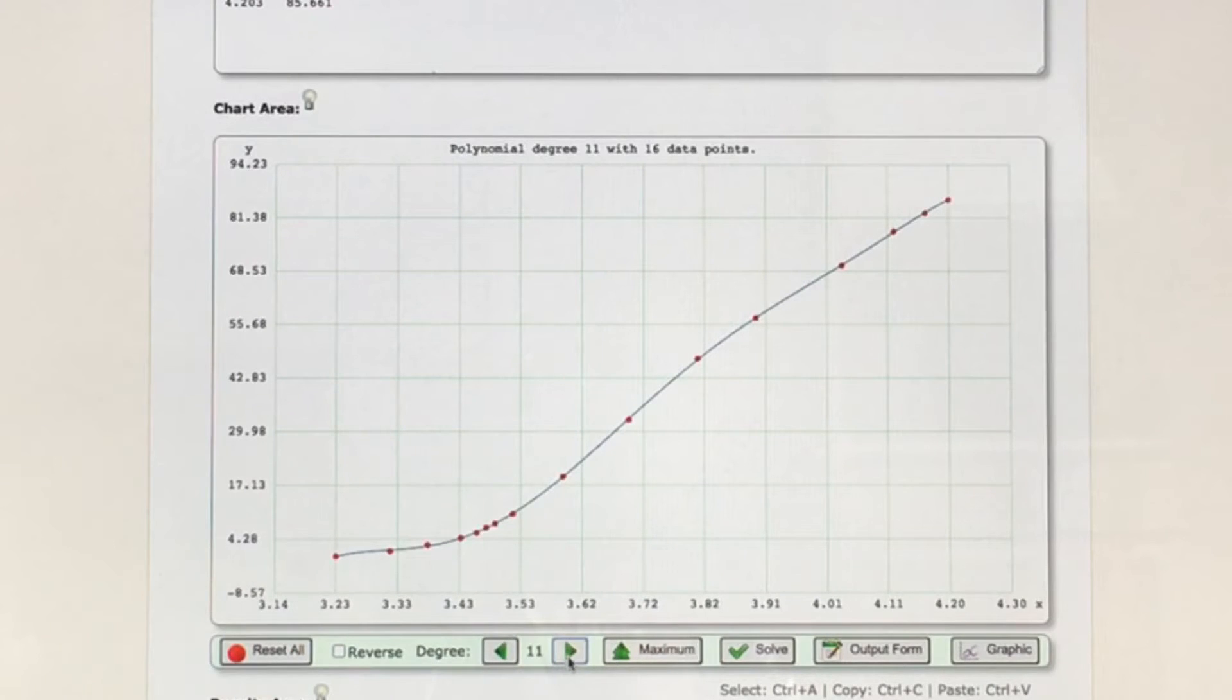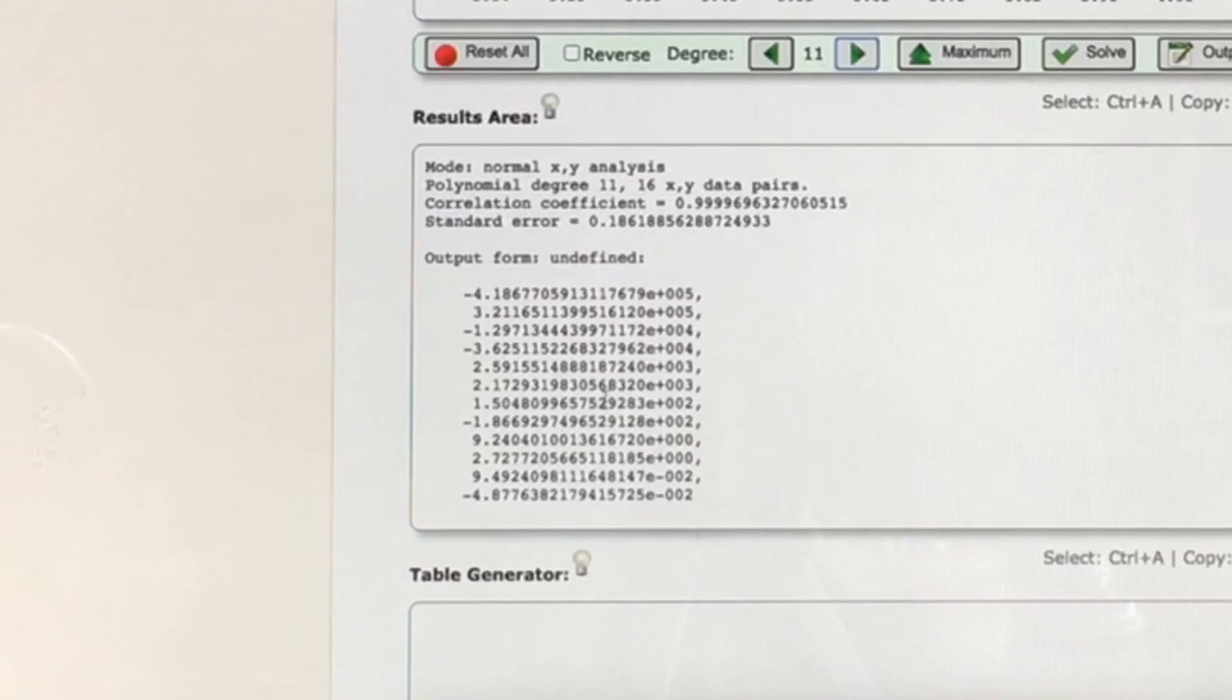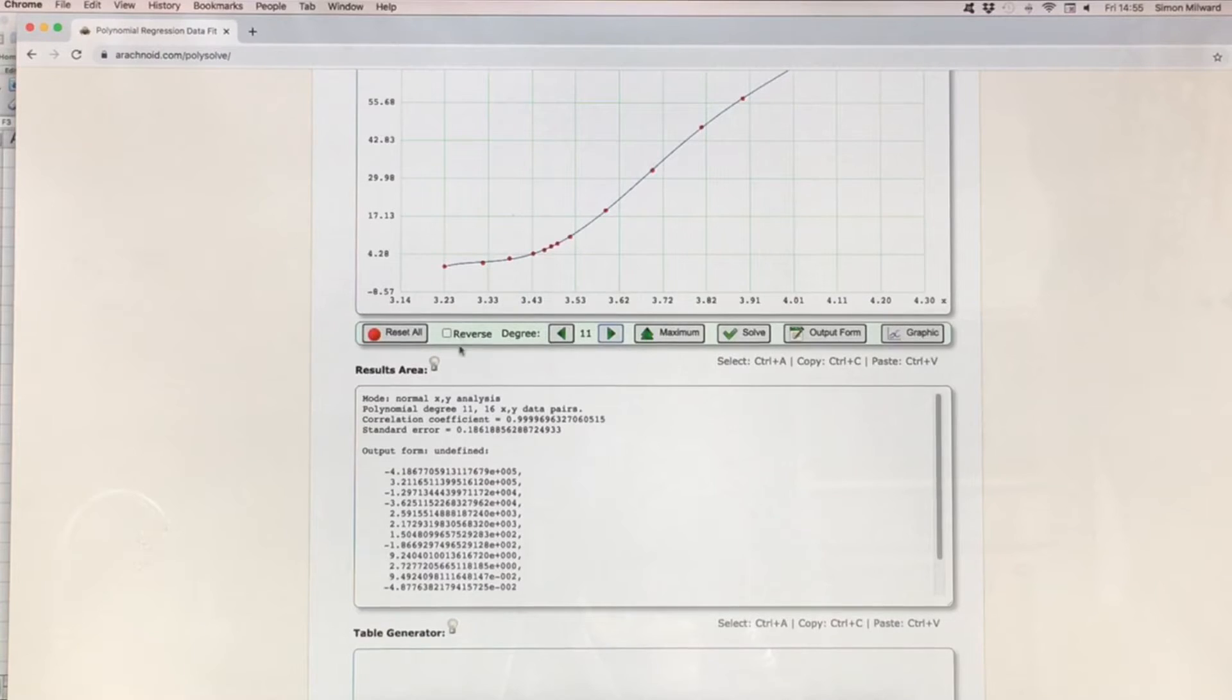So I've created a polynomial of degree 11 because that seems to fit this the best. You then take the coefficients of this polynomial, so that these coefficients describe the whole of that line as an equation. Put those back into Excel.